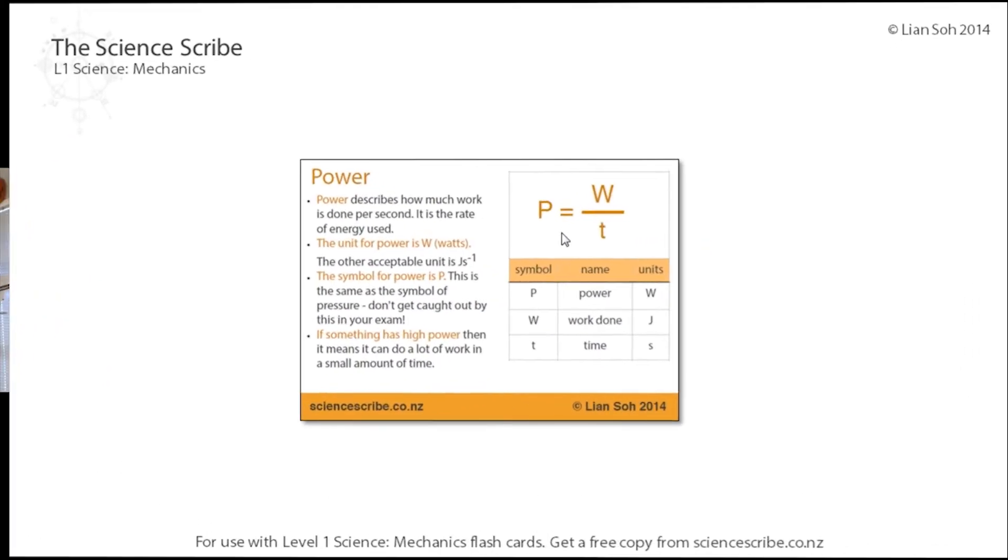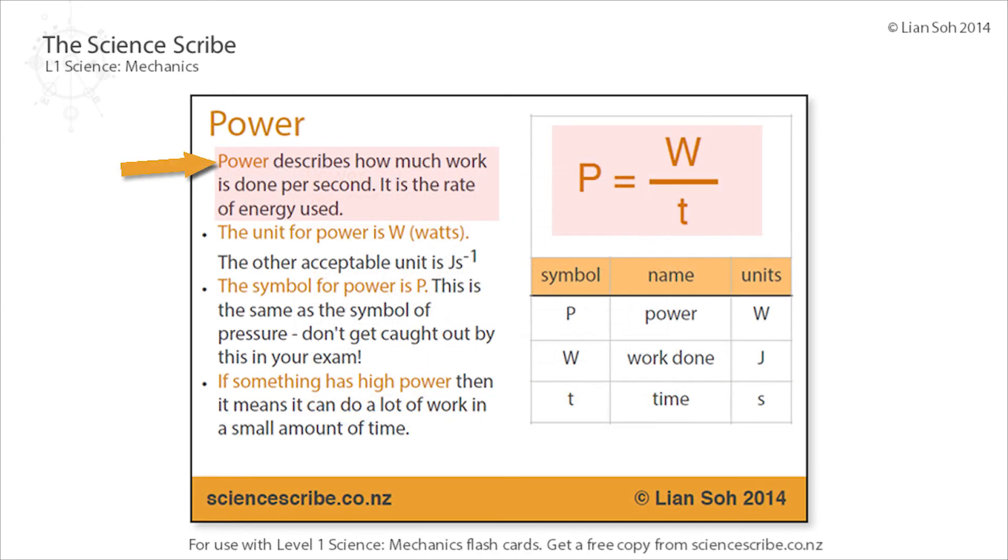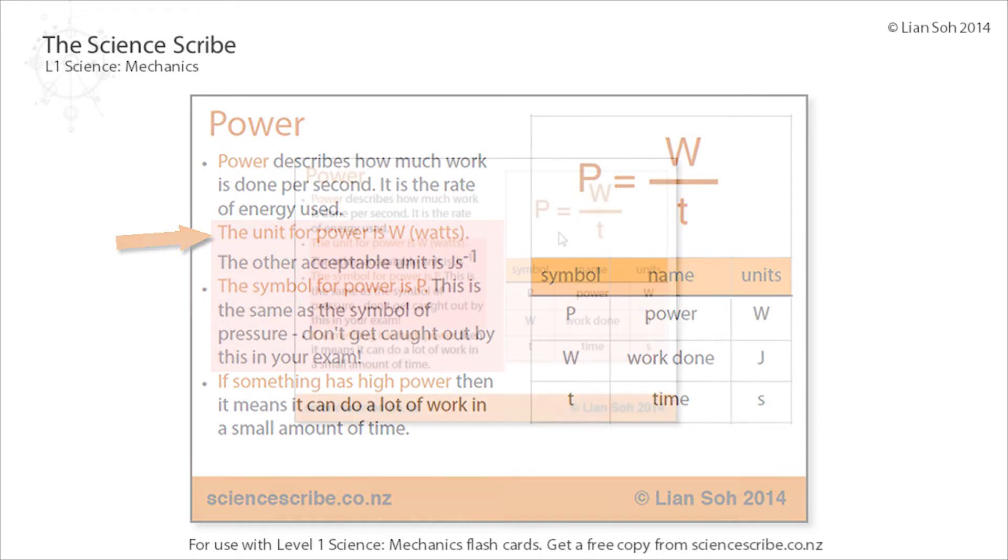Now power simply describes how much work is being done per second, which you can think of as the rate of energy being used. The unit for power is watts, the other acceptable unit is joules per second. The symbol for power is capital P. You don't want to get caught out in your exam because there's another formula that has a capital P in it which is for pressure.